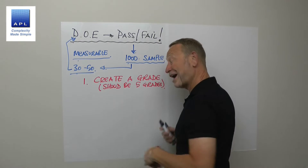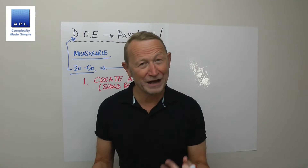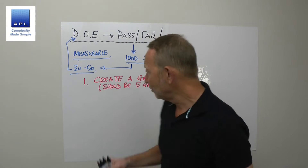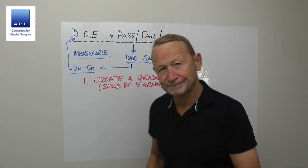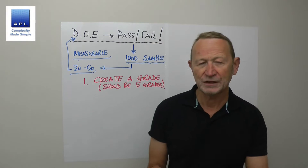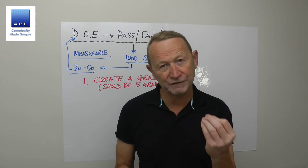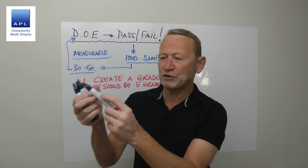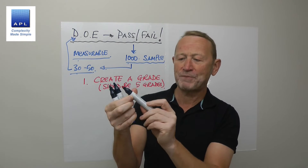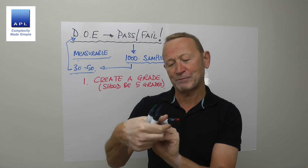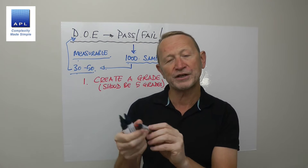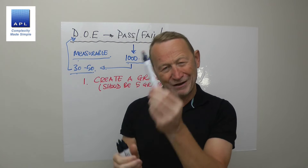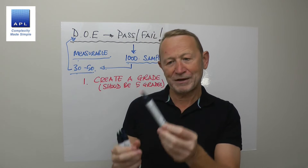The scale should go from one to five, A to E, whatever you want to call it — but one to five, because we want numbers in the DOE. There should be at least five grades. So what you're doing — if you were looking at the printing on this pen, for example, and the printing has got defects in it and you're not going to send that to the customer...